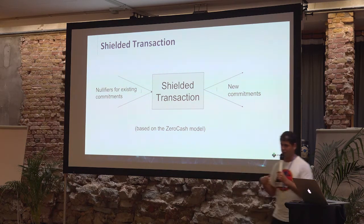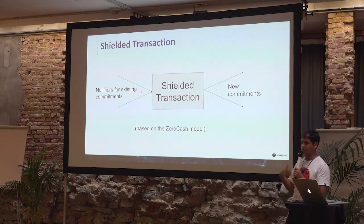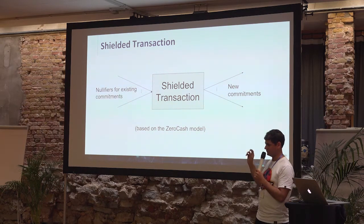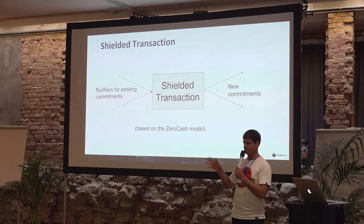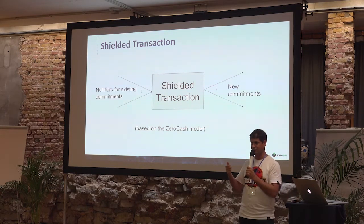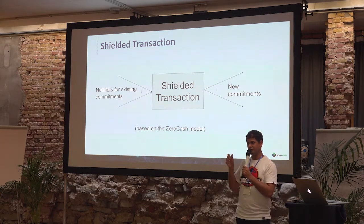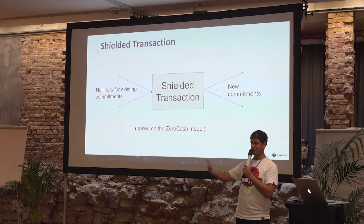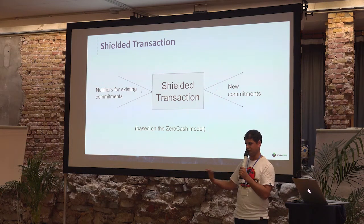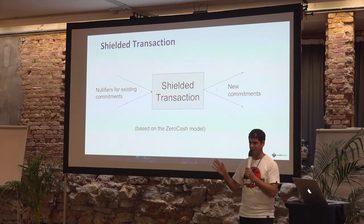So again, when I want to spend value, I'm proving in zero knowledge that I know some commitment presented before that belongs to some root. I know the secret key that fits to this commitment, and I reveal a nullifier that also fits to this commitment, and I show this nullifier to the blockchain. I'm basically saying: hey, I spent some commitment — you don't know which commitment it is — but here's the nullifier. I prove that this nullifier belongs to this commitment, so this shows that I cannot spend it again.